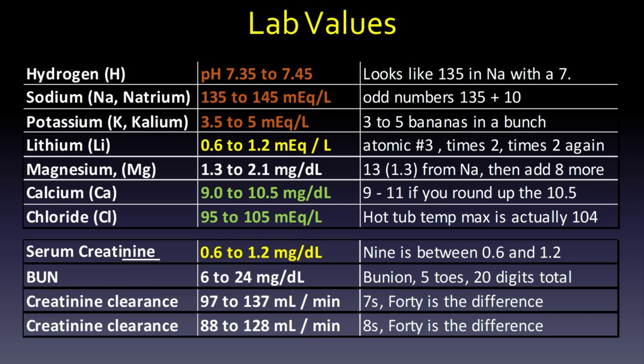For creatinine clearance — the 7s and the 8s. Creatinine clearance for men is 97 to 137 milliliters per minute — those are the 7s — with 40 as the difference. For women, creatinine clearance is 88 to 128 milliliters per minute — these are the 8s, they end in 8 — and 40 is the difference again.